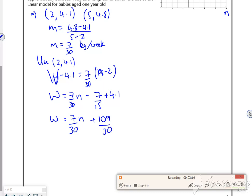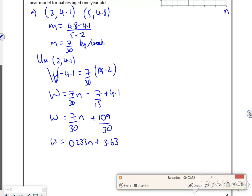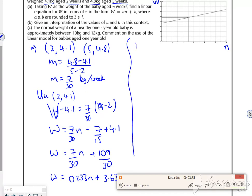But it wants them to free sig fig. So as a final bit. 0.233 N plus 3.63. So that's the equation. That's part A. And I'm at 3 minutes 30 already. So let's have a look at part B. Let's see if we can sneak it into the 5 minutes. I suspect we can.